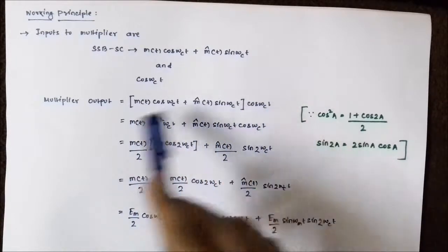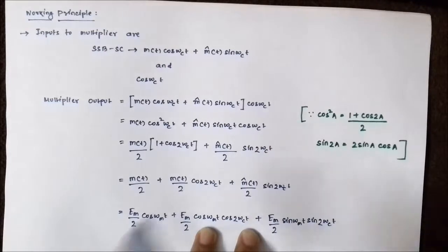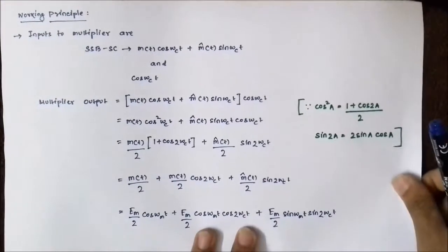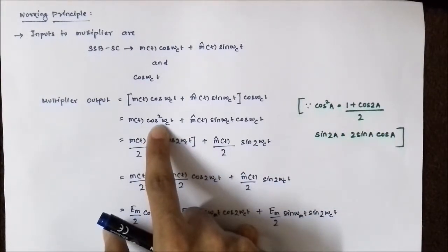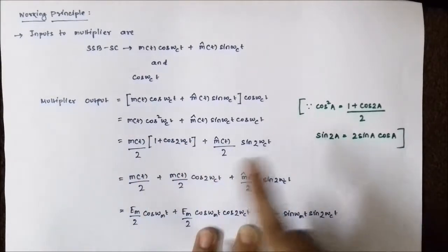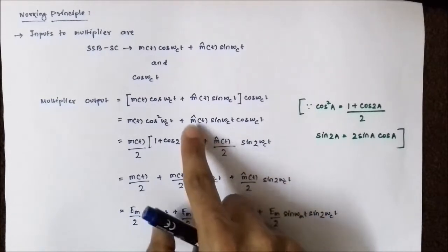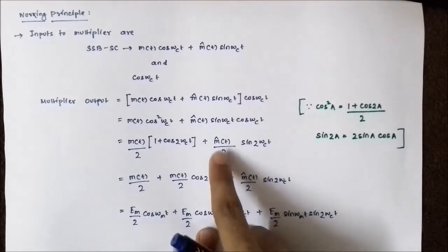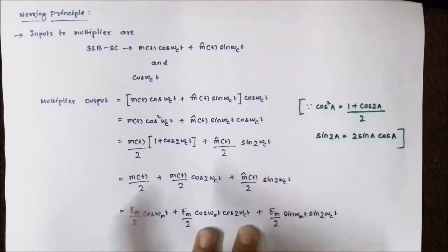Expanding, this equals m(t)·cos²(ωc·t) + m̂(t)·sin(ωc·t)·cos(ωc·t). Two trigonometric identities are now applied: cos²A = (1 + cos2A)/2 is applied to cos²(ωc·t), giving m(t)·(1 + cos2ωc·t)/2; and sin2A = 2·sinA·cosA is applied to sin(ωc·t)·cos(ωc·t), rewriting it as m̂(t)/2·sin(2ωc·t) by dividing and multiplying by 2.